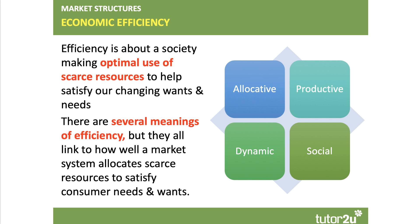There's no one single meaning of efficiency. We're going to focus on allocative, productive and dynamic in this short video. But they all link to how well a market allocates those resources and to see if the outcomes are favourable from society's point of view.